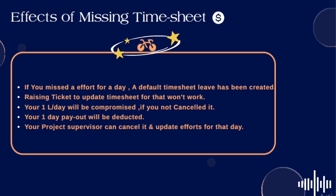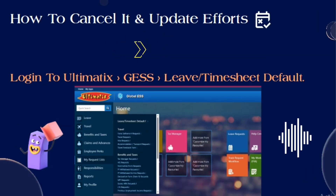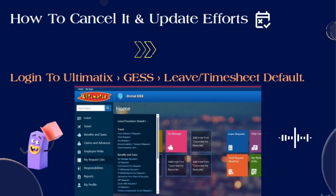There is only one way you can update your efforts for that day, or you can request to cancel it so that it won't affect your payout. The person who can easily cancel and update your effort is your project supervisor — he can approve your cancel request and is able to update the effort for that particular day on your behalf, and it won't affect your payout.